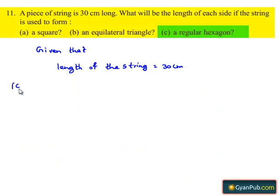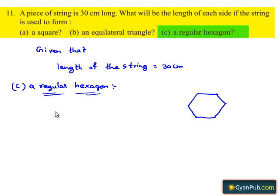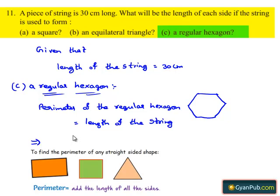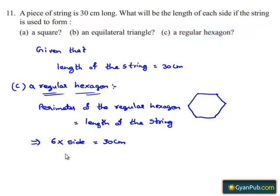Now take the case of the regular hexagon — here is the regular hexagon. In order to form a regular hexagon with the given piece of string, the perimeter of the regular hexagon must be equal to 6 times the length of each side, which is equal to the length of the string, 30 cm. By transposing 6 to the RHS, we get side is equal to 30 cm divided by 6. Since 6 goes into 30 by 5 times, we get the length of each side as 5 cm.